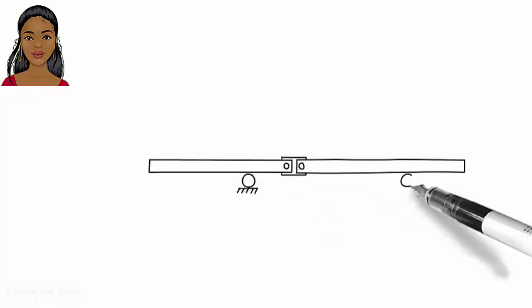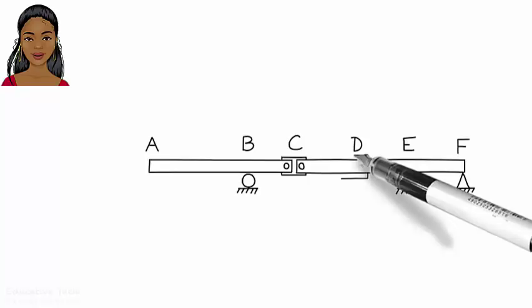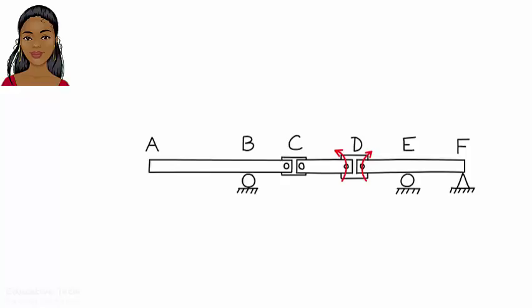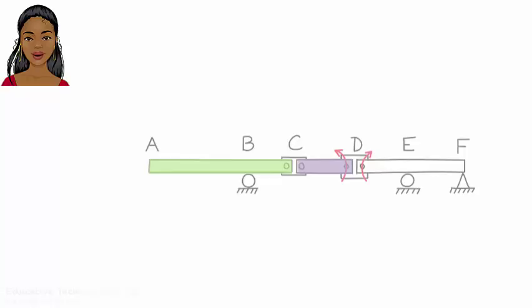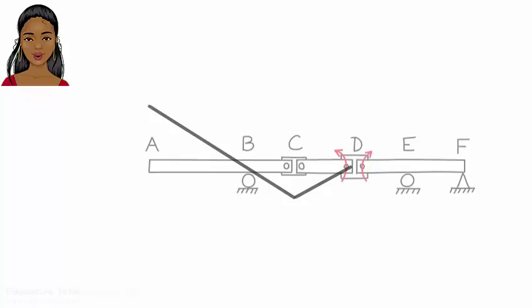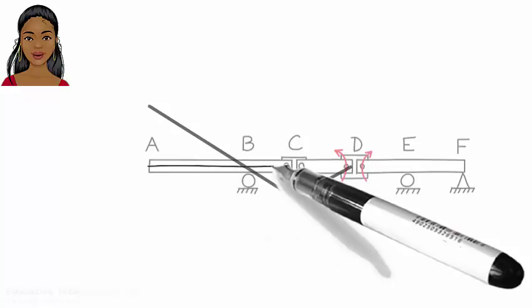Let's consider another example: draw the moment influence line for point D. Place a fictitious hinge at D and apply a positive moment to the hinge. Now draw the displaced shape of the beam. The beam is divided into three bars: AC, CD, and DF. The clockwise moment at D wants to turn bar DF in the clockwise direction, but it cannot since neither E nor F can move vertically — so bar DF does not undergo any displacement. The counterclockwise moment at D wants to turn bar CD counterclockwise. This can happen only if bar AC permits point C to move down. Bar AC can indeed accommodate a downward movement of C, as it can rotate about point B, forcing A up and C down. So here is the moment influence line for point D.